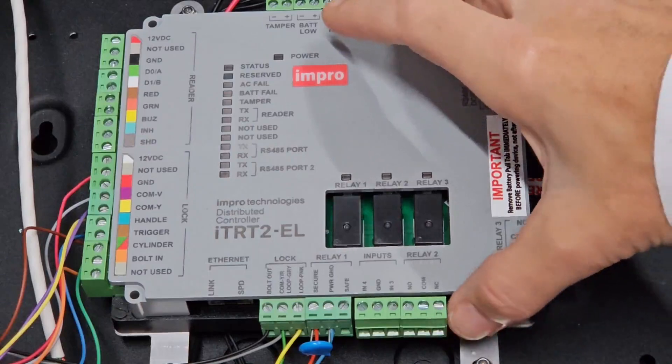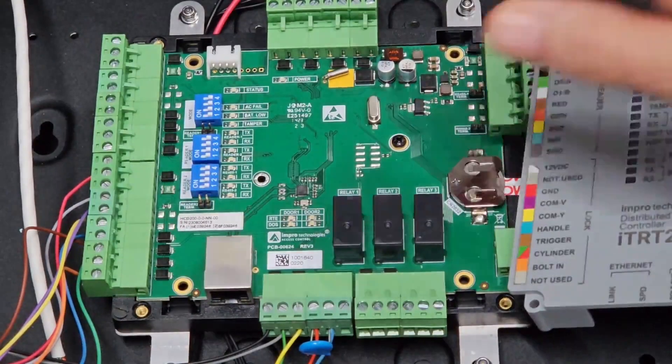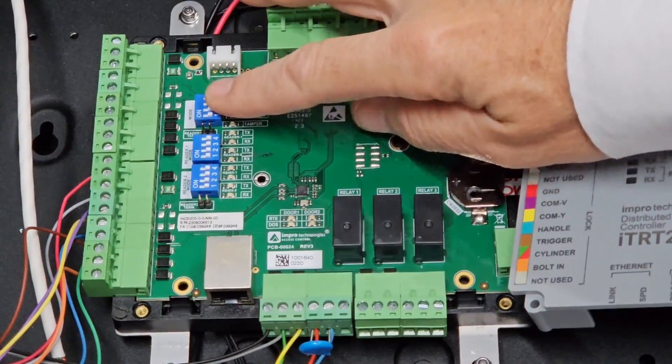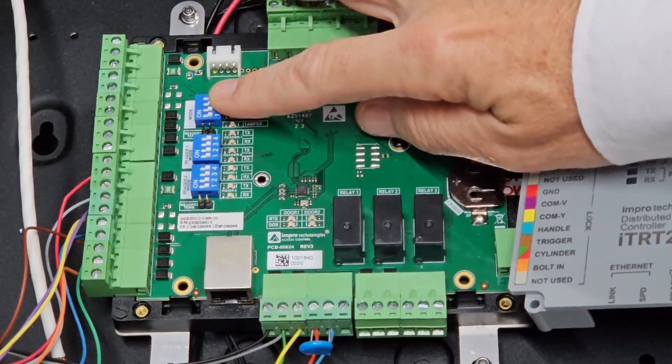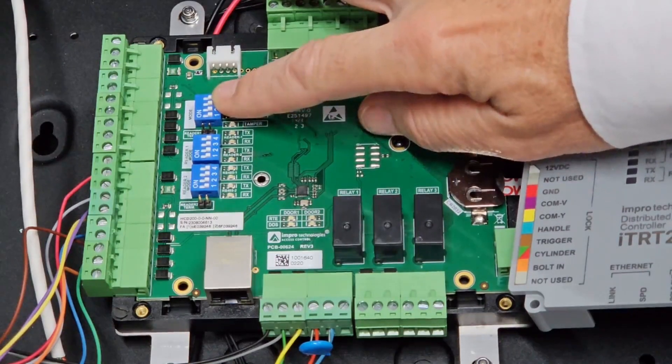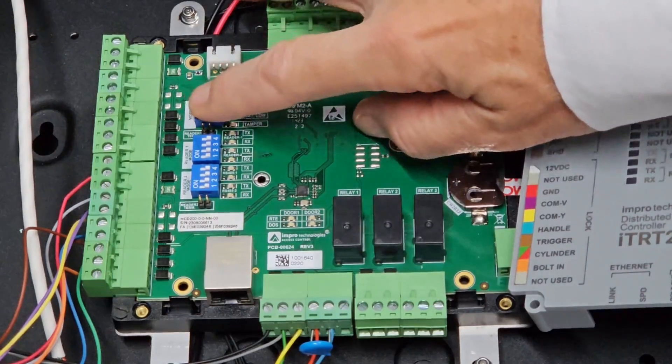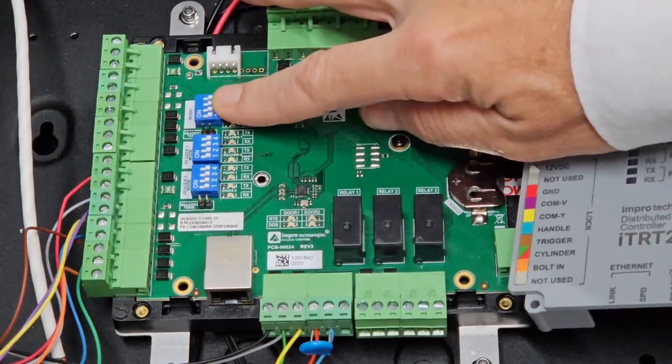Running through the DIP switch settings. The mode DIP switch must be set to 0000, that's all switches off. This is the door controller mode.